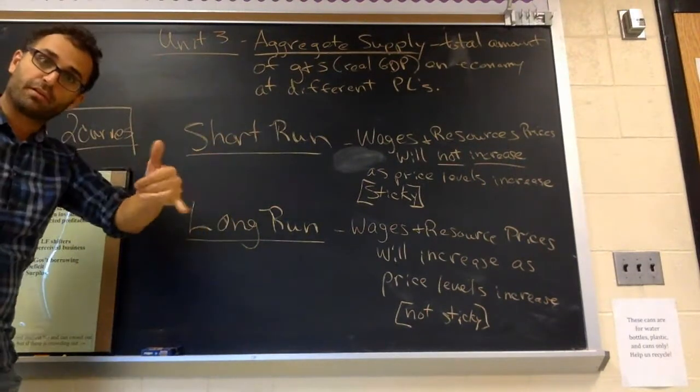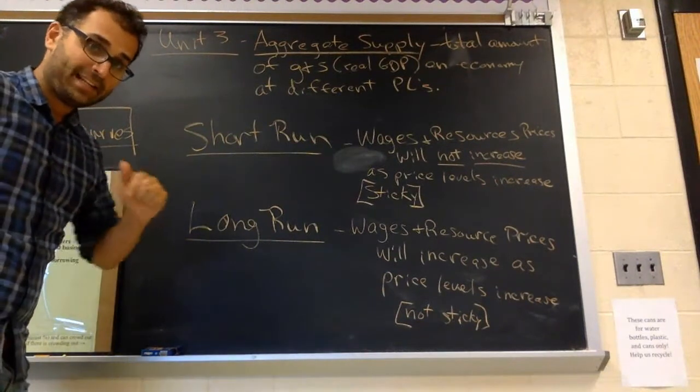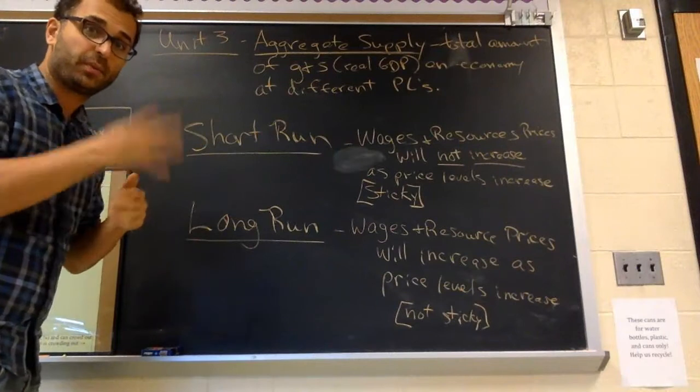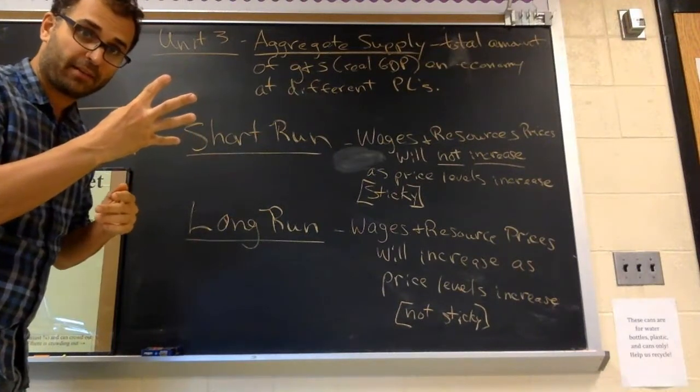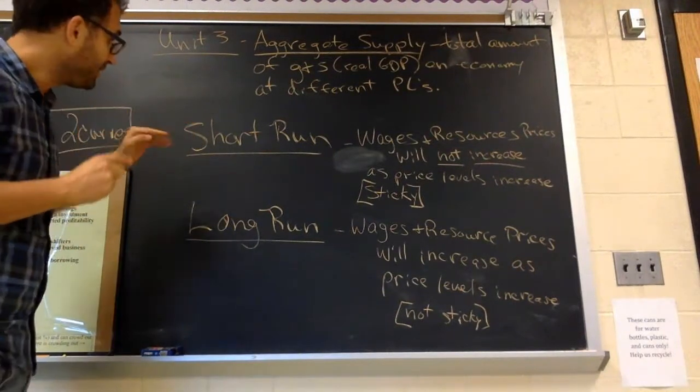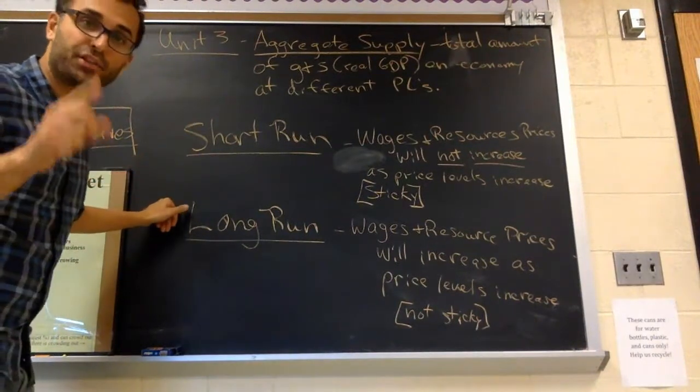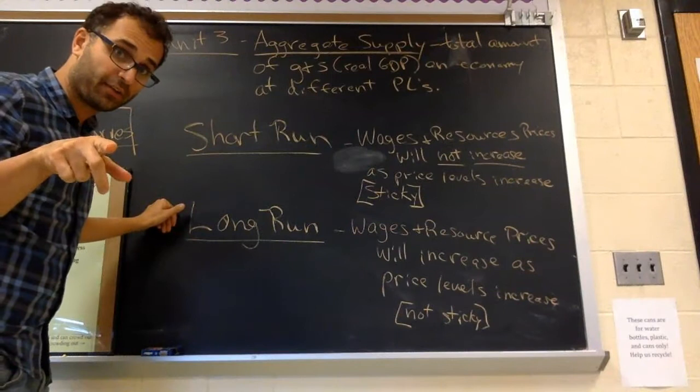So you have two curves, and this is where it gets a little tricky. AD is one curve, only one curve. It's always downward sloping and it always shifts with the four components of aggregate demand. Aggregate Supply has two different curves, one in the short run, one in the long run, and they have different shifters. So you're going to have to do a little more studying for aggregate supply.